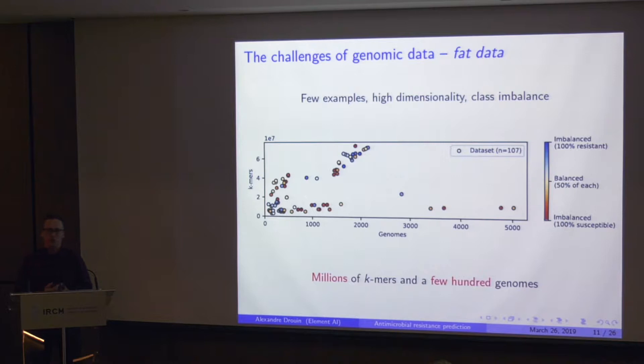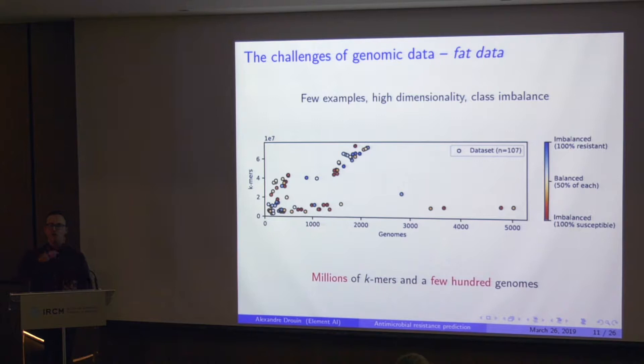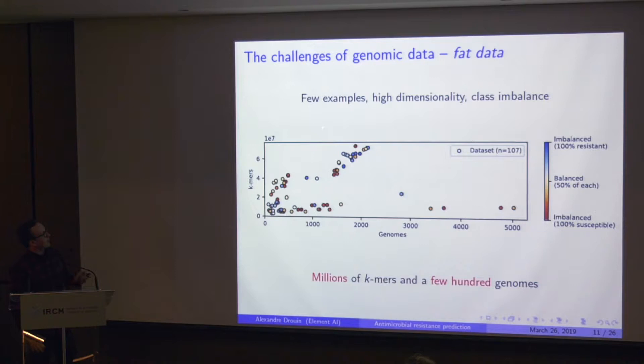This K-mer representation is nice because it allows genome comparison without multiple sequence alignment — it's a reference-free method. However, it creates challenges: this is the fat data setting, the transpose of big data. In fat data you have very few observations but very high dimensionality. In our case, we often have a few hundred genomes versus tens of millions of K-mers. We also have class imbalance — many more resistant examples than susceptible ones for some antibiotics, and sometimes the reverse.